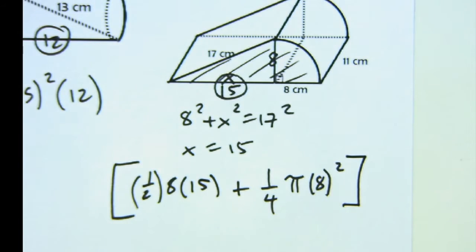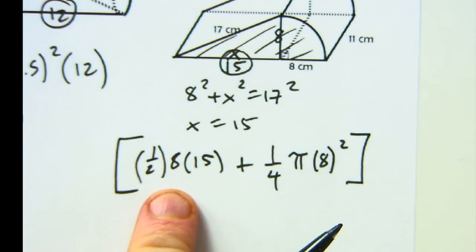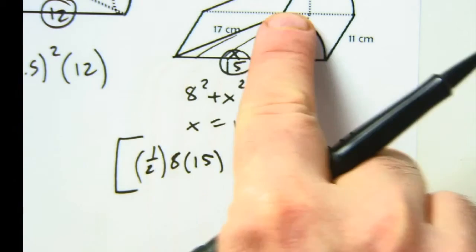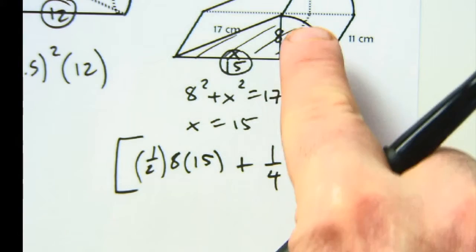All right, that's my base. Let's make sure you understand that that's my base. It's a triangle, one half base times height. There it is. It's added to a fourth of a circle.